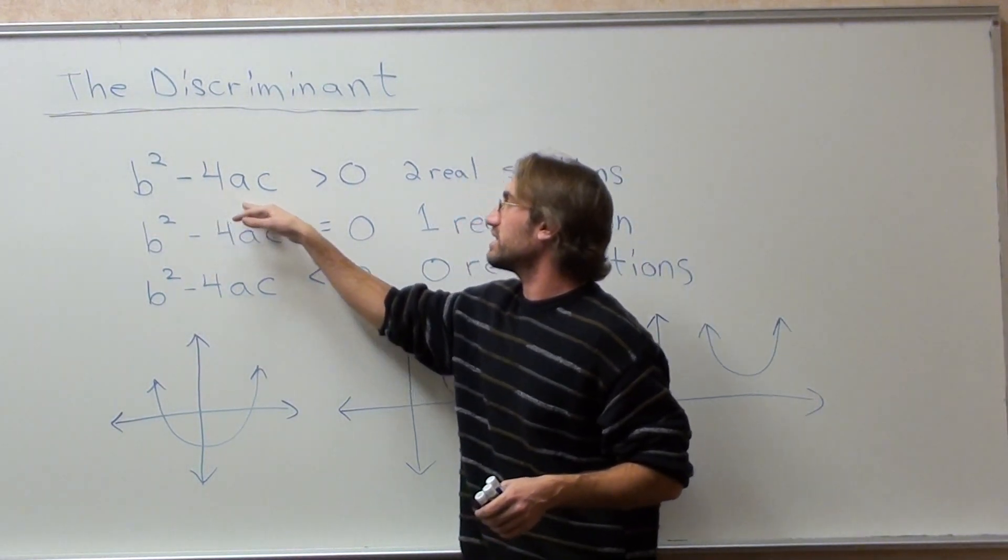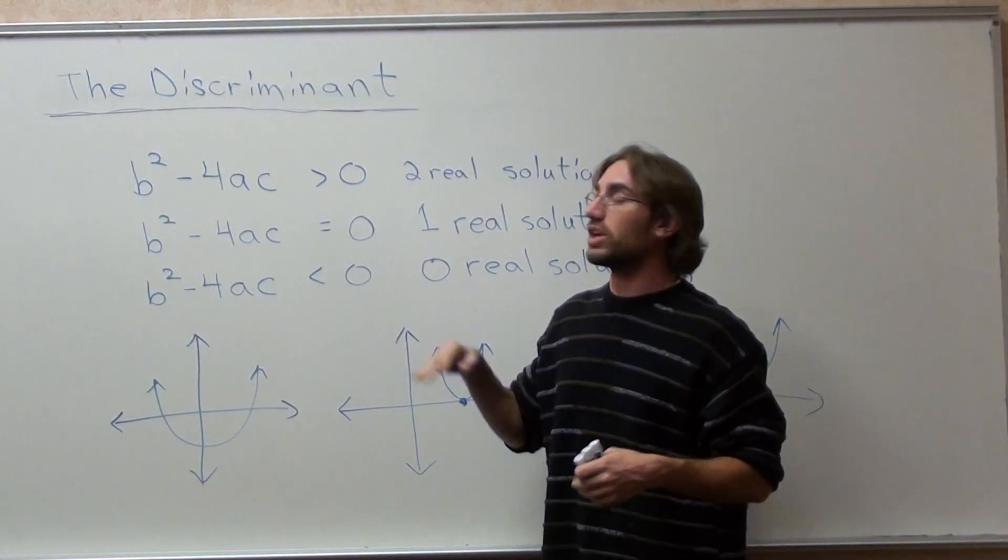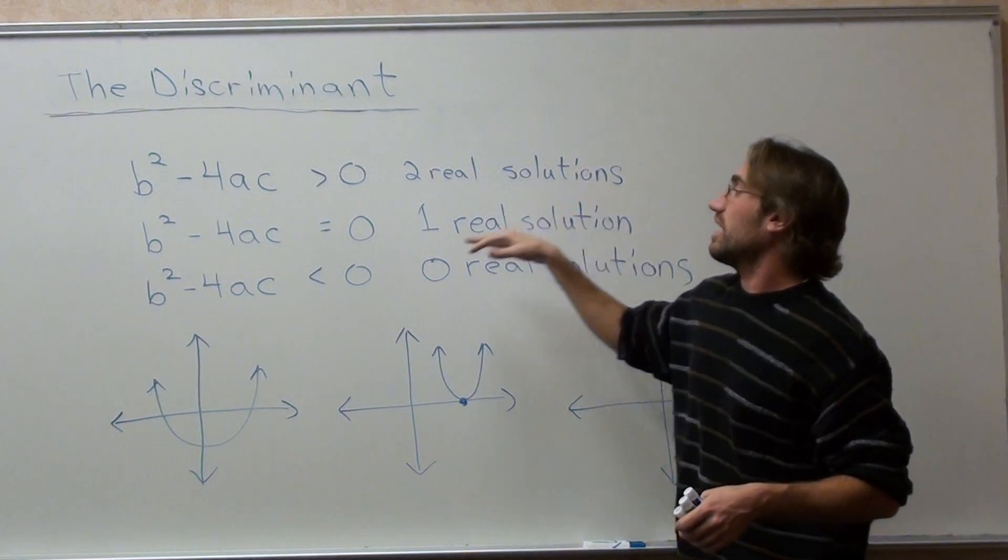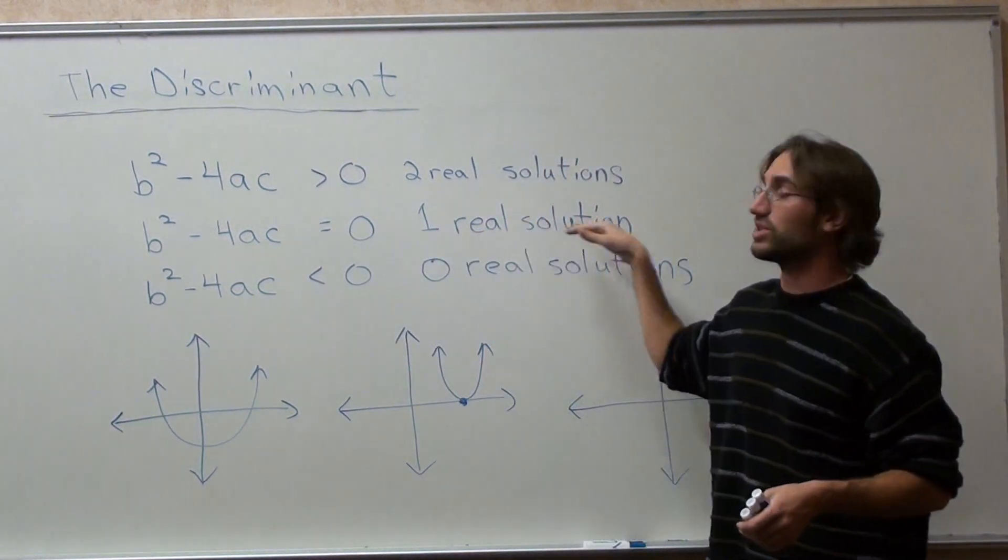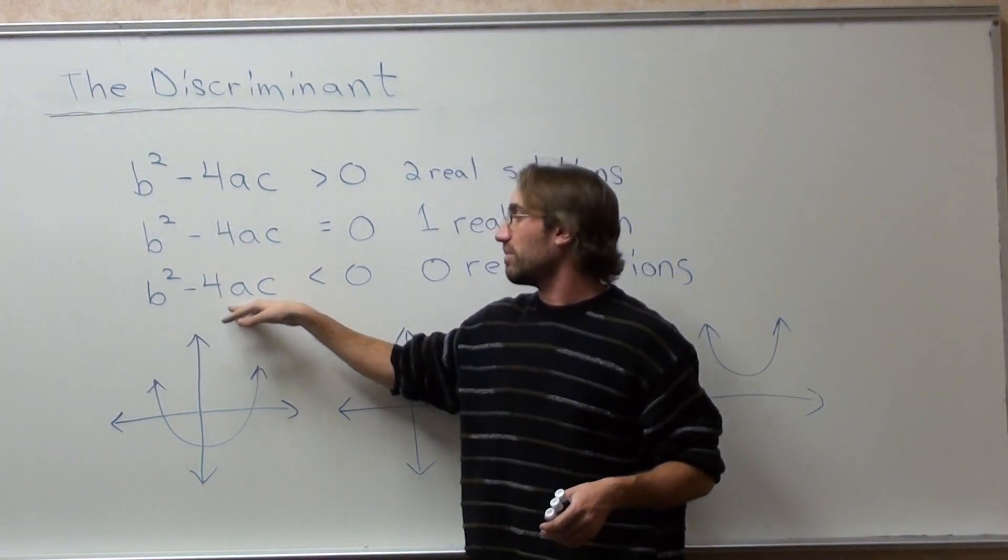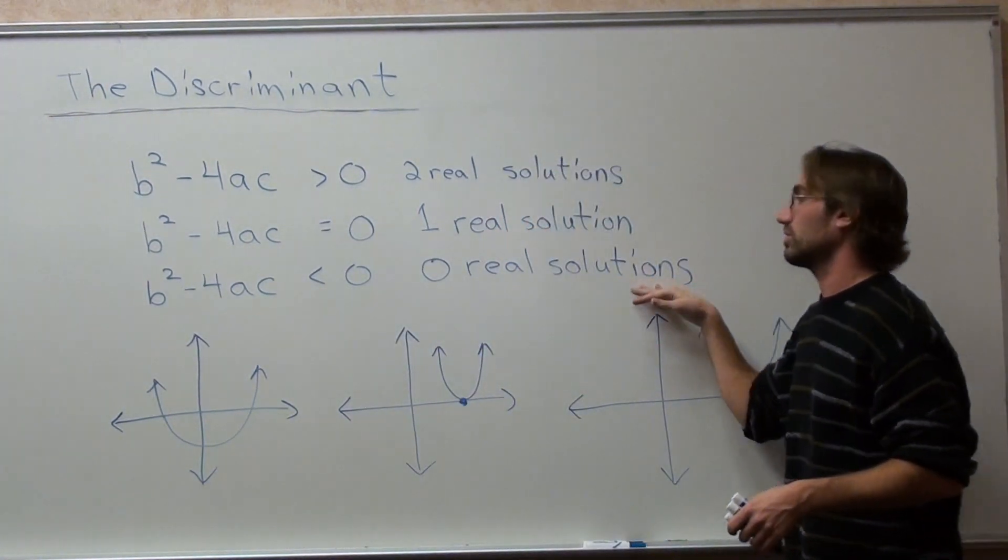If b squared minus 4ac is greater than 0, you're going to have two real solutions. If b squared minus 4ac is equal to 0, then you're going to have one real solution. And if b squared minus 4ac is less than 0, we're going to have zero real solutions.